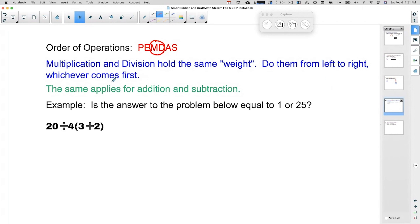So do them from left to right, whichever comes first. Now, before we dive too deep into that, let's make sure we take care of our parentheses in this problem. Yes, I am going to go ahead and work the parentheses out. So three plus two, we get five.